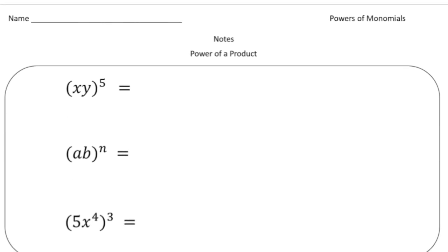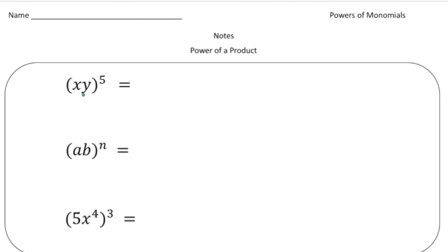Now let's take a look at another rule called the power of a product. This time we have two different variables inside the parentheses being multiplied together — it's xy to the fifth power. We're multiplying x and y together, that's the product, and then raising it to a power. What you do is raise every single part inside the parentheses to the power outside, so this equals x to the fifth times y to the fifth.